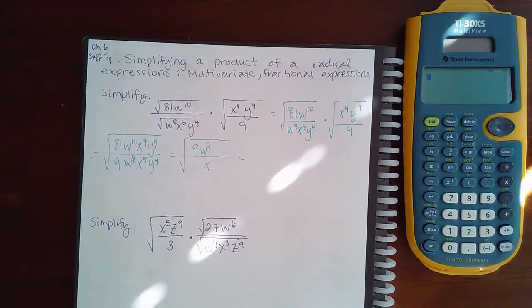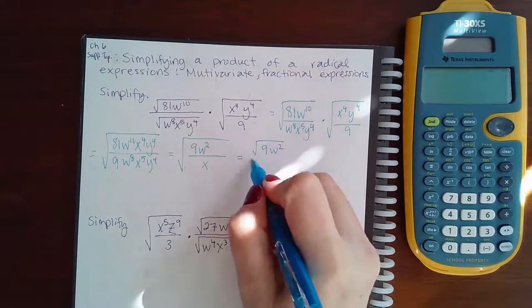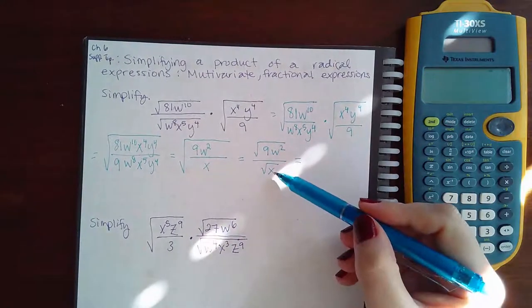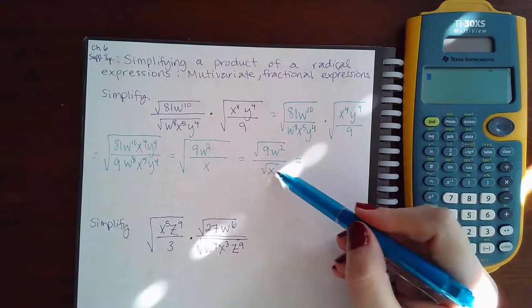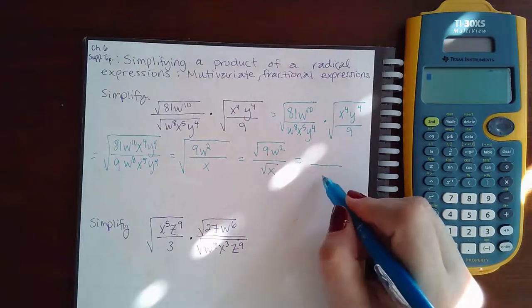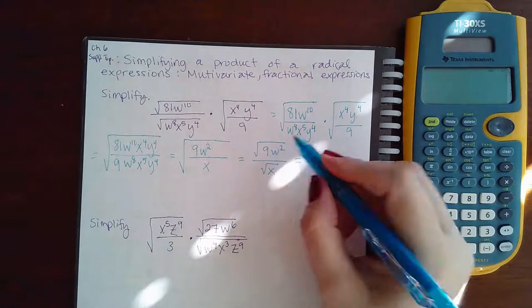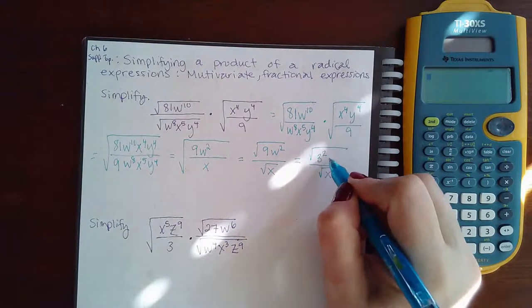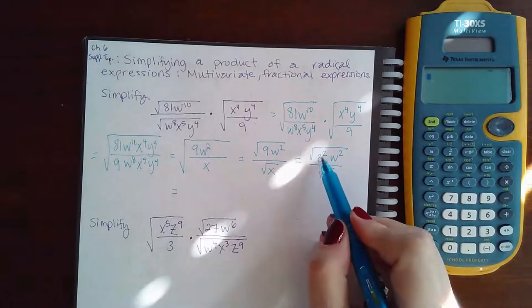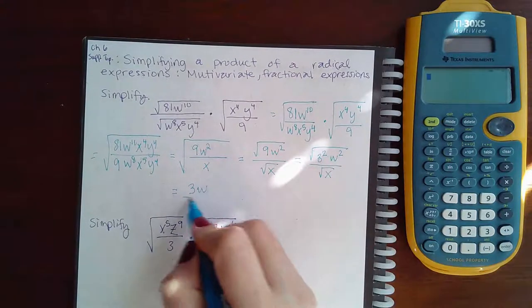We're going to separate that and do the square root of 9w squared and then the square root of x. Now this is a single x all by itself, so there's not enough to come out. One divided by two is zero on the outside but one still left over on the inside. Here this can be written as 3 squared and then the w squared stays the same. The square root of 3 squared is just 3, square root of w squared is just w.